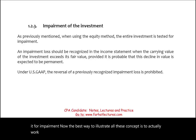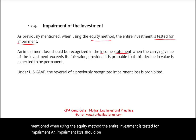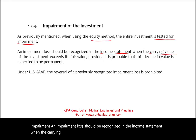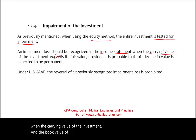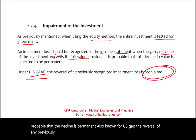Regarding impairment: when using the equity method, the entire investment is tested for impairment. An impairment loss should be recognized in the income statement when the carrying value of the investment is greater than its fair value, provided the decline is probable and permanent. Also note that for US GAAP, the reversal of any previously recognized impairment loss is prohibited — this is a straightforward point that often appears as a multiple choice question.